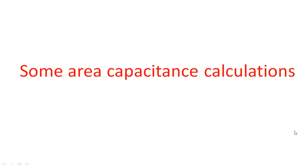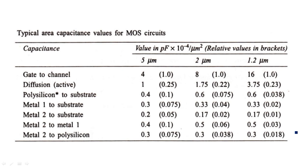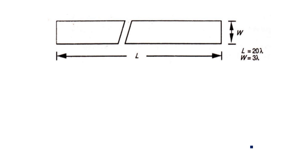Now, if you see this table, along with the capacitance values, you also have relative capacitance values given in brackets for all different types of capacitors — gate to channel, metal to metal, polysilicon to metal, and so on. All these values are given in brackets as relative capacitance values. We will now see how to use this relative capacitance value in the calculation of capacitance from gate to channel, metal one to metal two, or any type.